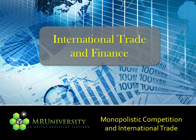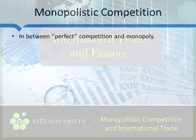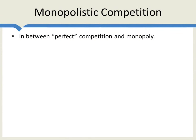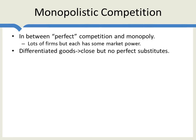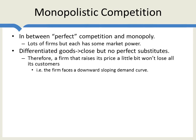Today we explain the model of monopolistic competition and apply it to international trade. The monopolistic competition model is in between perfect competition and monopoly. From perfect competition, we have lots of firms — so many that each firm takes the actions of all others as given, so there is no strategic interaction. But each firm has some market power, as with monopoly, driven not by restrictions on entry, but by differentiated goods. Each firm produces a product for which there are close, but no perfect substitutes.